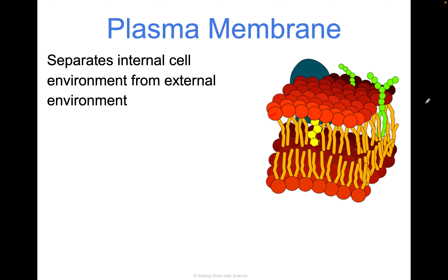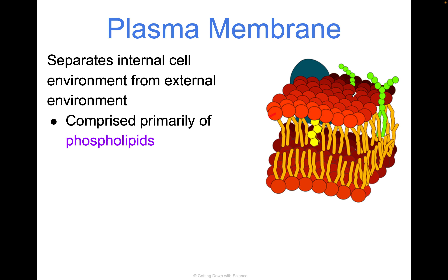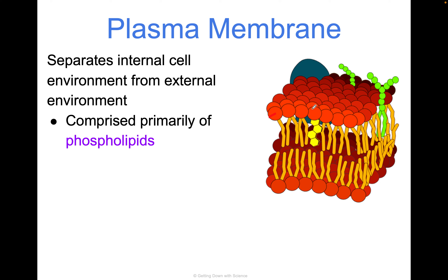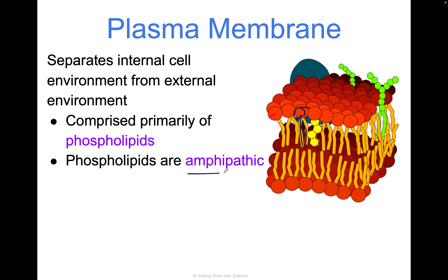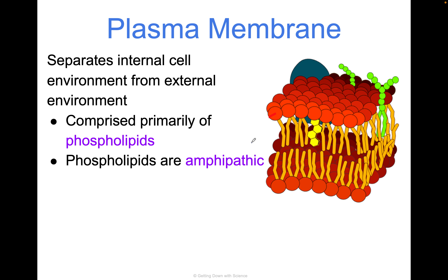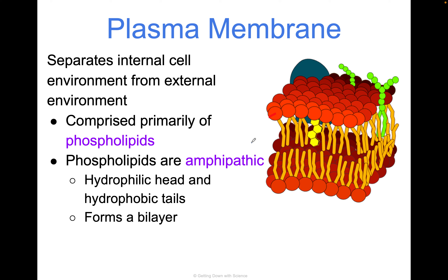The function of the plasma membrane is to separate the internal cell environment from the external environment. It's comprised mostly of phospholipids, but as we just saw, there are a lot of other factors, proteins, and things that go into it. Here's your phospholipids — there's the hydrophilic head and hydrophobic tail. These phospholipids are amphipathic, meaning one side likes water and one side does not like water. Amphipathic means both polar and nonpolar.